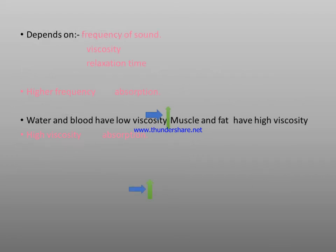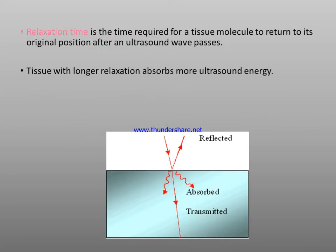Absorption depends on three factors: first, frequency of sound; second, viscosity; third, relaxation time. Higher frequency leads to higher absorption. Water and blood have low viscosity, while muscle and fat have high viscosity. In the case of high viscosity, there is high absorption. Relaxation time is the time required for a tissue molecule to return to its original position after the ultrasound wave passes. Tissues with longer relaxation time absorb more ultrasound energy.